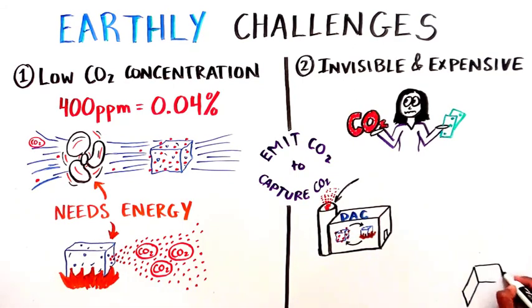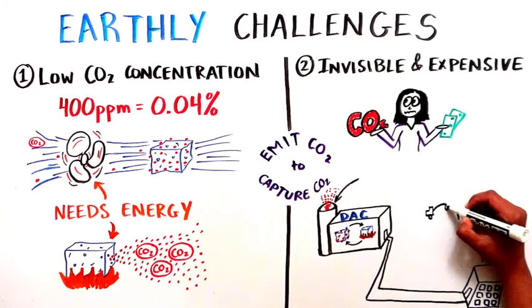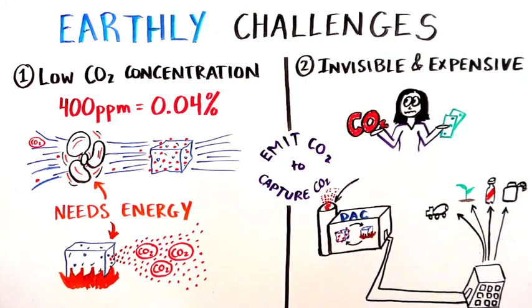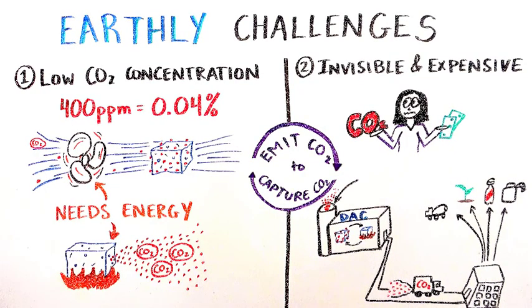One way is by partnering with businesses that can use the captured CO2 to make products like cement, fertilizer, carbonated drinks, and clean fuel. However, since the captured CO2 must somehow be transported from the direct air capture facility to the manufacturer's company, this once again brings up the problem of emitting CO2 to capture it.